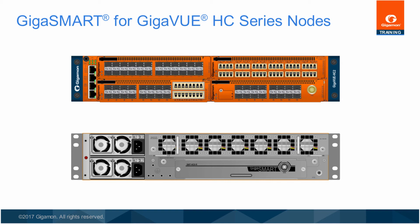The GigaSmart intelligent packet modification platform is required for GigaSmart software applications and licenses. The GigaSmart platform is an optional blade on HC series, available in both a front and rear module. Both front and rear modules include slicing, masking, source port, and GigaView tunneling de-encapsulation. Additionally, the GigaSmart front module includes 16 SFP Plus ports. Up to five GigaSmart modules — four front and one rear — can be populated per GigaView HC2 to provide scalable performance up to 200 gigabits.